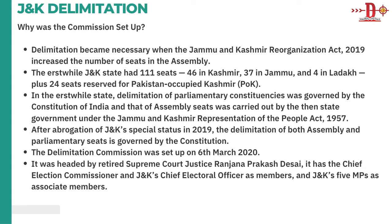In 2019, the J&K Reorganization Act increased assembly seats. Before that, the Jammu and Kashmir state had 111 seats — 46 in Kashmir, 37 in Jammu, 4 in Ladakh, plus 24 seats reserved for Pakistan-occupied Kashmir. The delimitation of parliamentary constituencies was governed by the Constitution of India, while assembly seat delimitation was carried out by the then state government under the J&K Representation of People Act 1957.